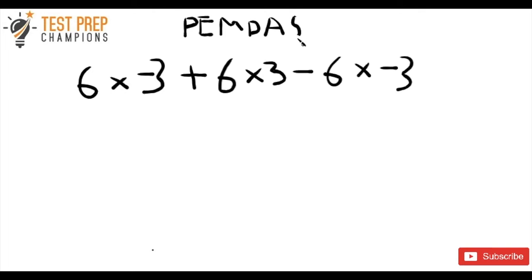And what that really means is the P is for parentheses, the E is for exponents and square roots, the M is for multiplication, D is for division, A is for addition, and S is for subtraction. All this really means is that we want to do the operations in this order.